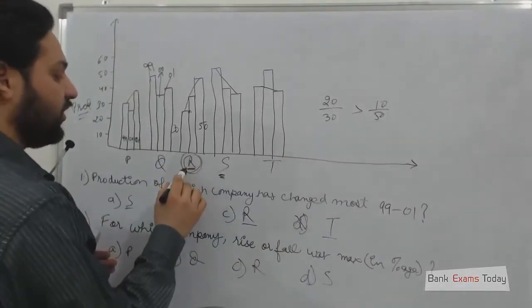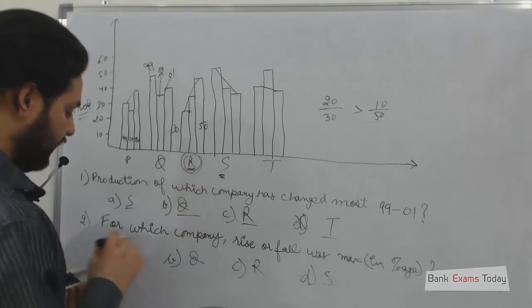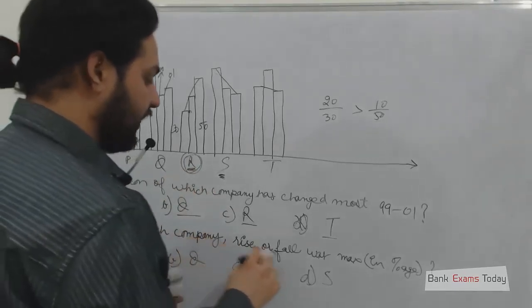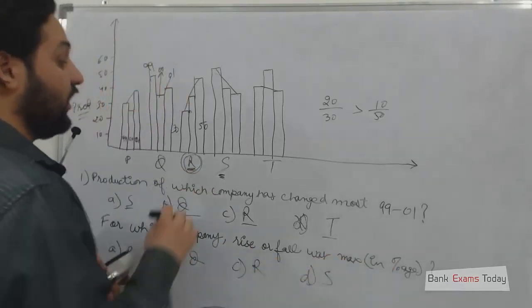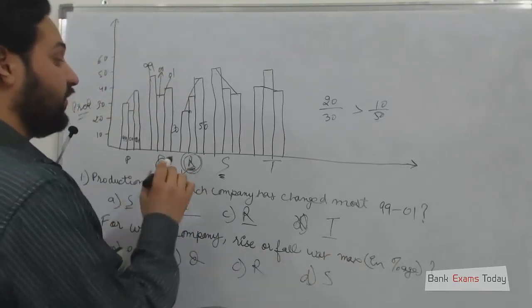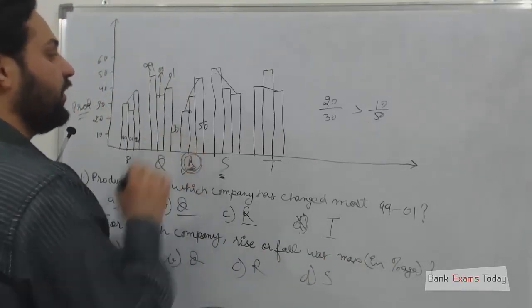The maximum change is in R. So in the next question, for which company was the rise or fall maximum in percentages? Again, the answer should be R. The rise or fall is maximum here.